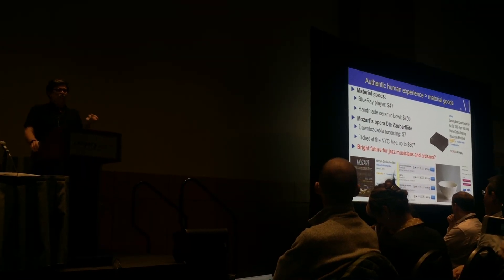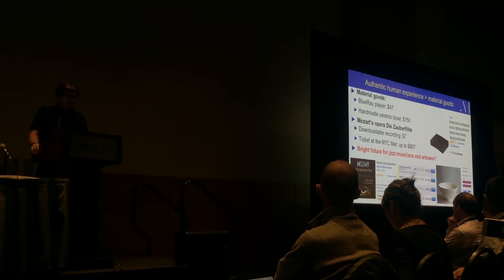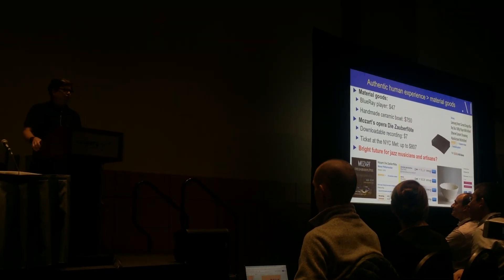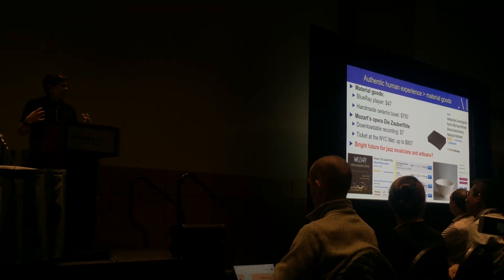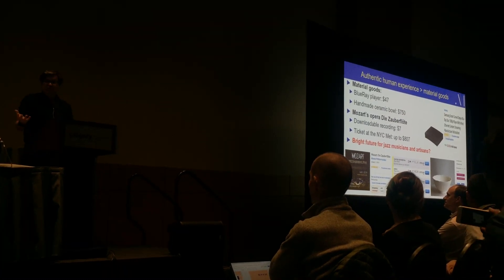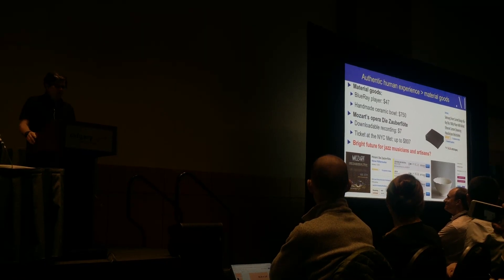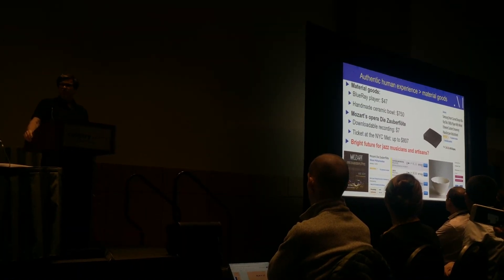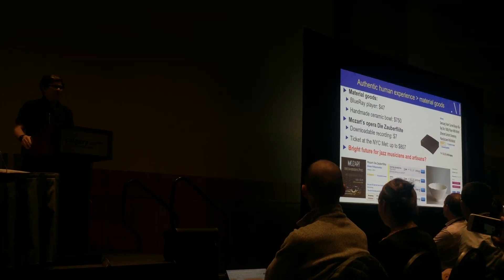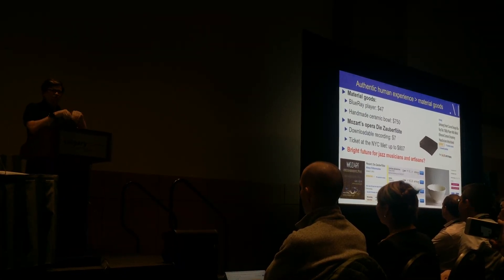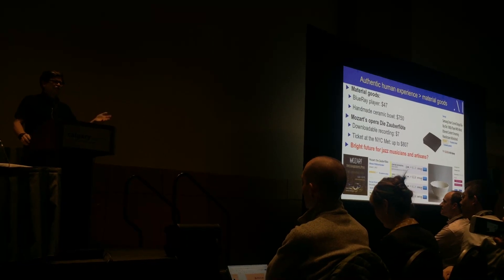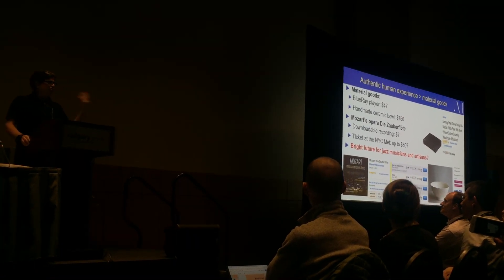What AI is going to do is change the value we attribute to things, and it's already started. You can buy a Blu-ray player for $47 — incredibly cheap given the sophistication involved: H.264 compression, blue laser. It's cheap because it's built by machines. But if you want to buy a handmade ceramic bowl, the technology is about 8,000 years old and it's $750. The difference is authentic human experience. The value of things produced by machines will go down; the value of authentic human experience will go up.